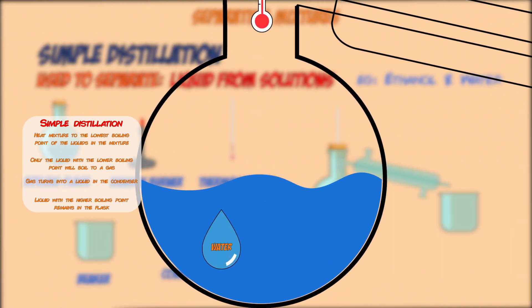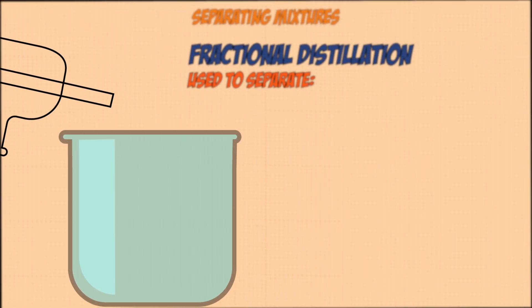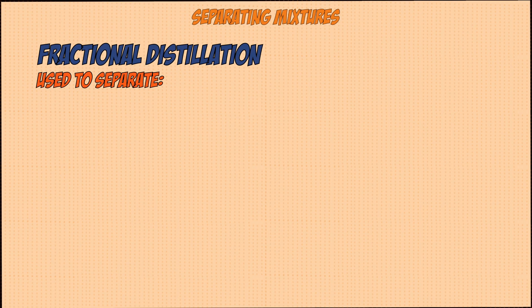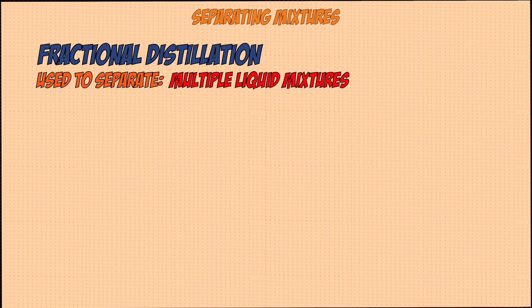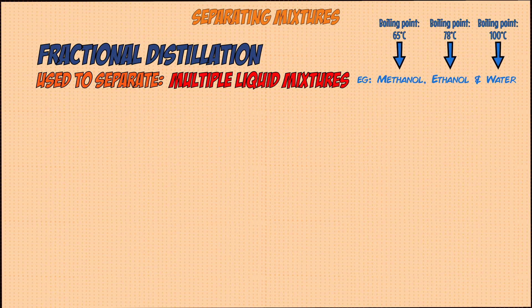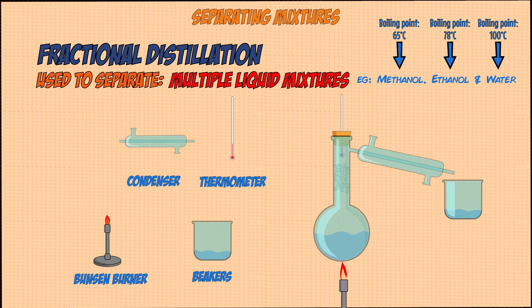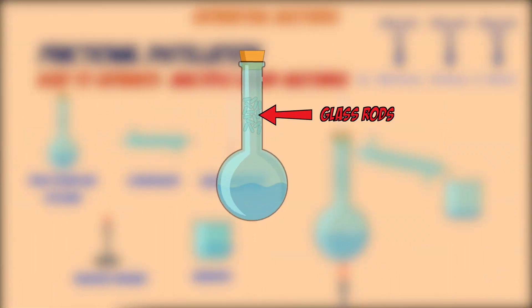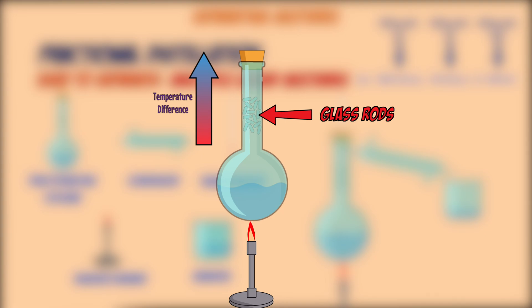Meanwhile the water remains in the flask. The second type is fractional distillation, used to separate mixtures containing more than two liquids. For example, a mixture of methanol, ethanol, and water. The setup is similar to simple distillation, however this time we include a fractionating column which has tiny glass rods in it. The long fractionating column creates a large temperature difference between the top and bottom, because heat only comes from the Bunsen burner at the bottom.